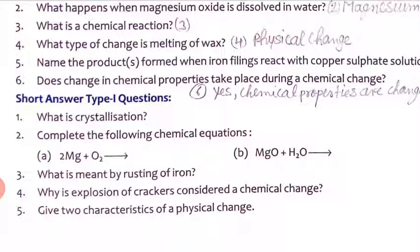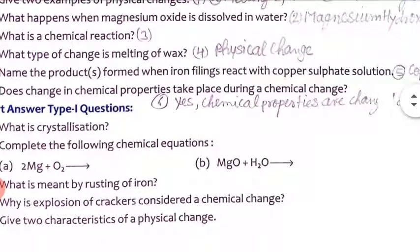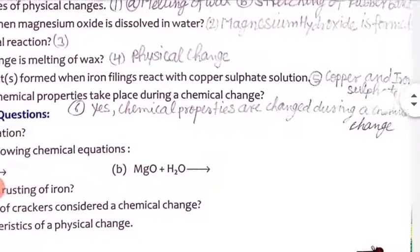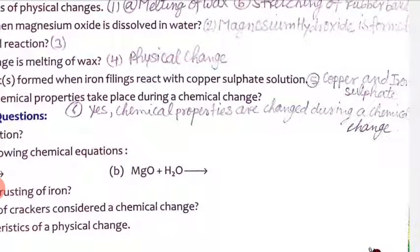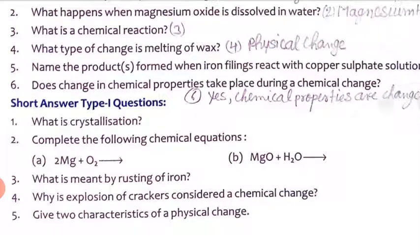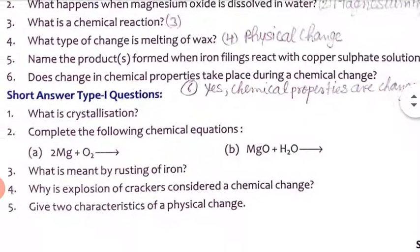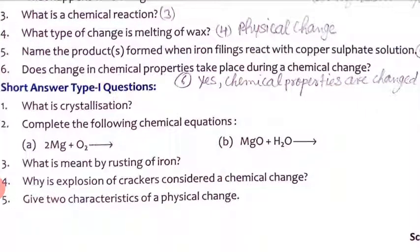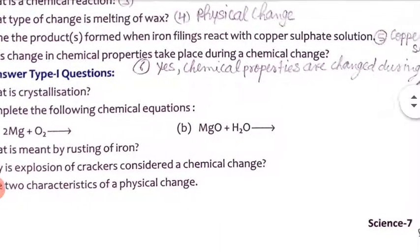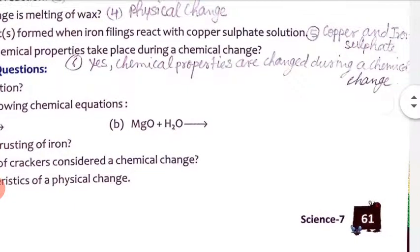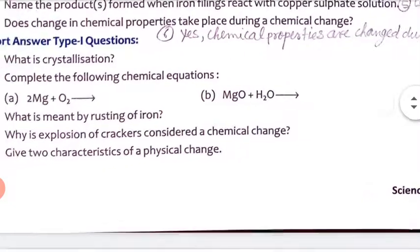Fifth question: name the product formed when iron filings react with copper sulfate solution. When iron reacts with copper sulfate solution, it forms copper and iron sulfate. Sixth question: does a change in chemical properties take place during a chemical change? Yes, chemical properties are also changed during a chemical change.